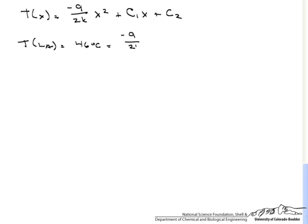So we know the temperature at x equals LA. So T at x equals 46 degrees C equals minus q dot over 2k times LA squared plus C1 times LA plus C2. So that is our first boundary condition. That is a constant surface temperature of 46 degrees C.